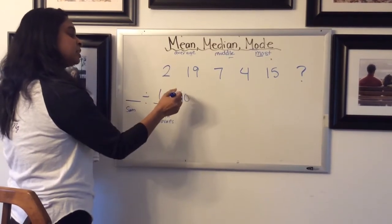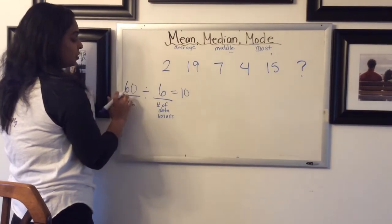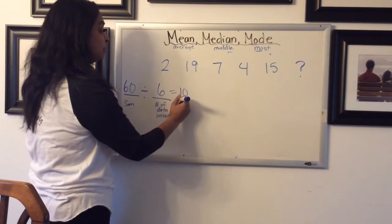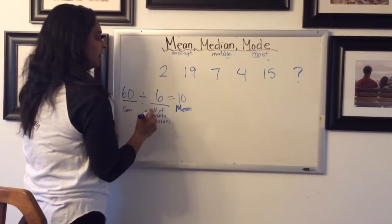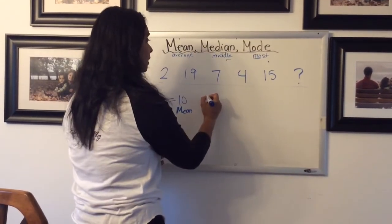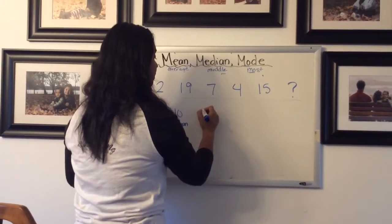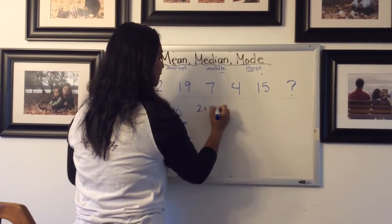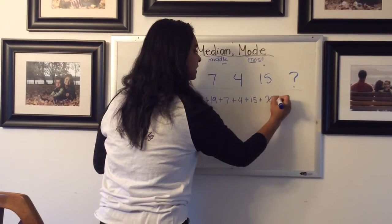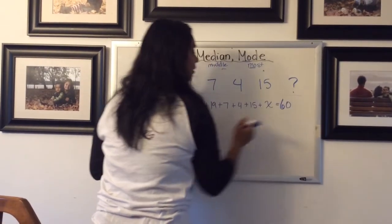Well, knowing my fact family, doing it backwards a bit, using a bit of algebra, 10 times 6 is 60. So that sum is 60. 60 divided by 6 equals 10. So if it told me that the mean is 10, and that all of these together add up to 60. So in other words, now it'll tell you to use X to represent that one. So 2 plus 19 plus 7 plus 4 plus 15 plus X equals, and then the sum is 60.